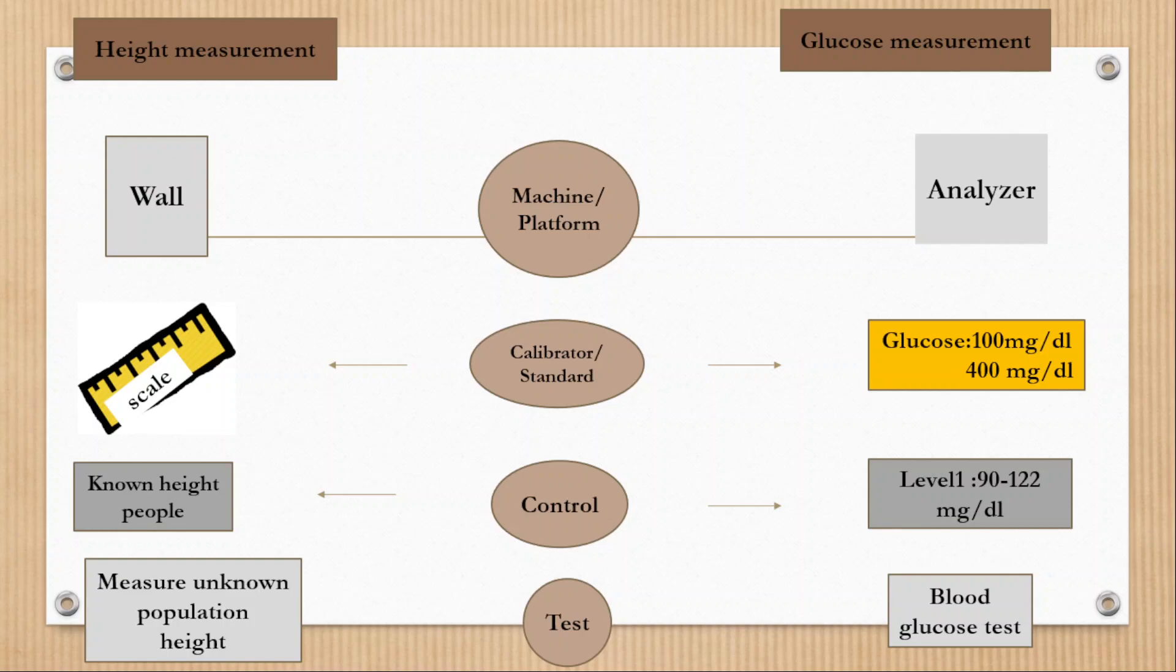In case of height measurement process, people whose height is already known can be taken as control. And when we measure their height at the wall, there should be good agreement in result, so that we can say that wall is well calibrated with scale. And in case of glucose measurement, we can run the control which is available in the market.